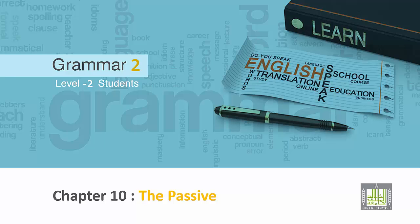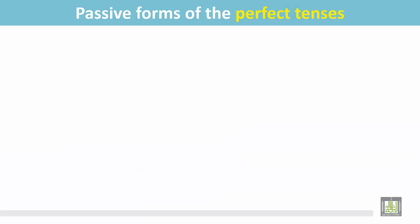Grammar 2 for Level 2 students. Chapter 10: The Passive. Passive forms of the perfect tenses.